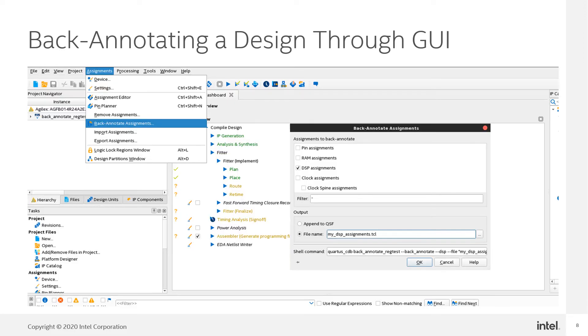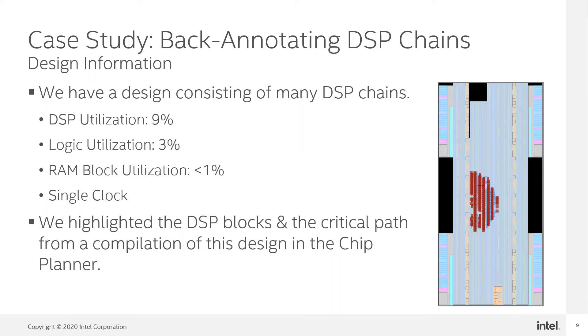You may find it easier to backannotate your design from the graphical user interface. The backannotation dialog box can be launched by clicking the Backannotate Assignments action item in the Assignments menu. With an understanding of how we could use backannotation, let's examine a real-world case study on how it can be useful.